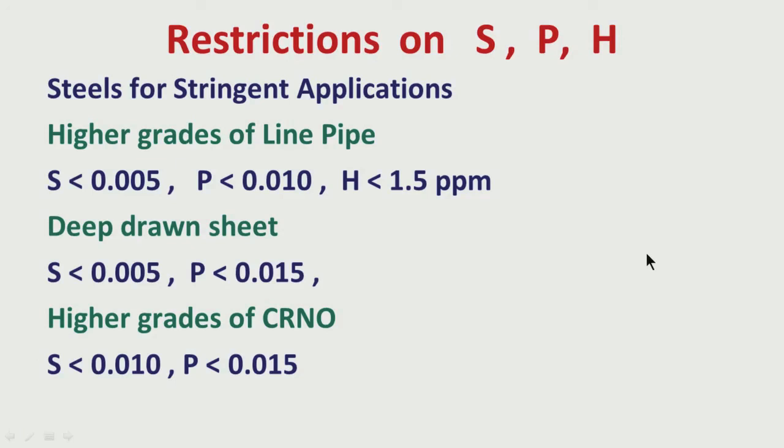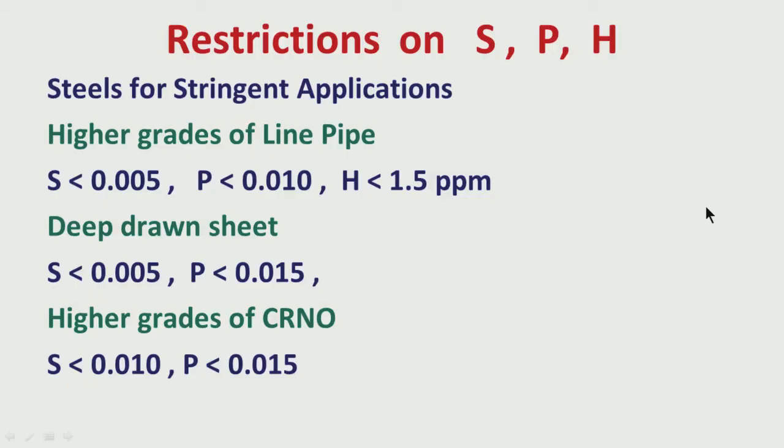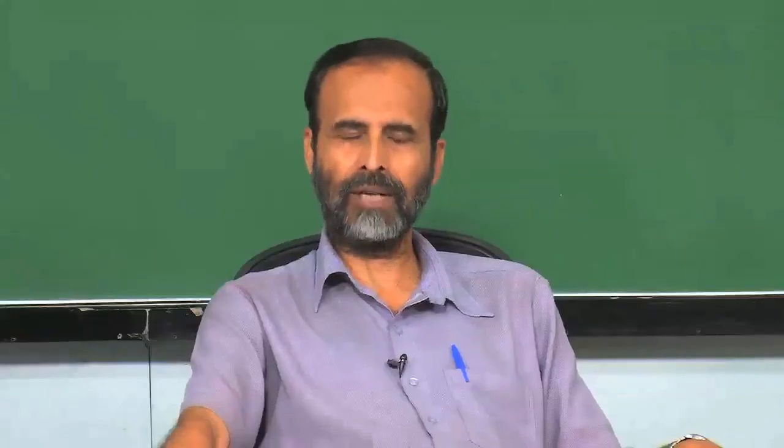One important point about hydrogen analysis: because hydrogen has the lowest atomic number and very small atomic size, its diffusivity is very fast. Even at normal temperature, hydrogen present in steel will try to diffuse out. Therefore, for hydrogen analysis, it is important to keep the sample under liquid nitrogen and then take it to the hydrogen analyzer. This will give a more realistic analysis — we get a realistic result only when the hydrogen sample is kept under liquid nitrogen before being put into the hydrogen analyzer.